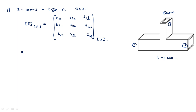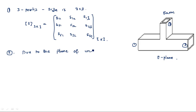Now first apply the properties of the S-matrix on this so that the parameters will be reduced. There are totally nine parameters. After application of the scattering matrix properties we can reduce the number of parameters. Due to the plane of unsymmetry — in H-plane it is symmetry, but here in E-plane it is unsymmetry.